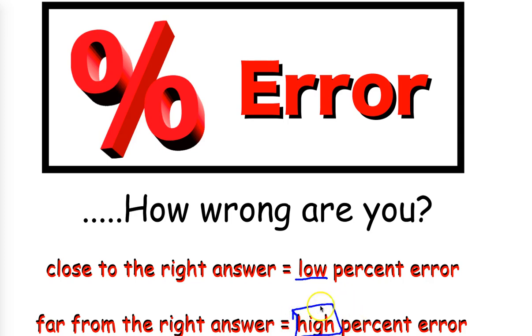Obviously we do not want a high percent error. You would rather have a low percent error, or the best possible percent error which would be zero, which means you were zero percent wrong. The best possible answer is zero because it means you actually got the right answer.